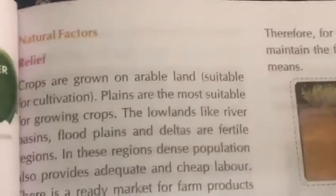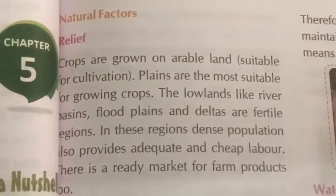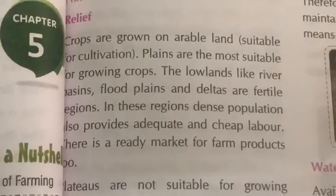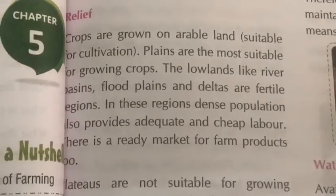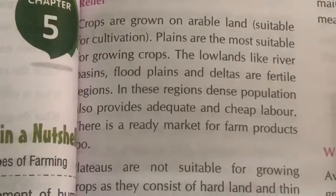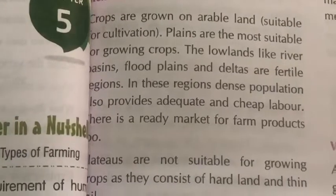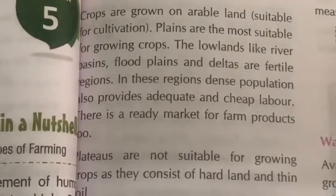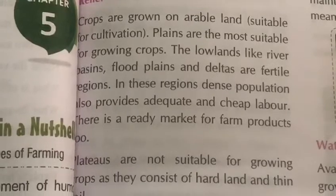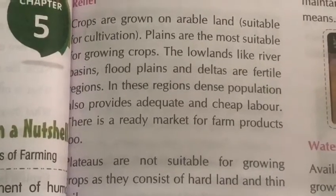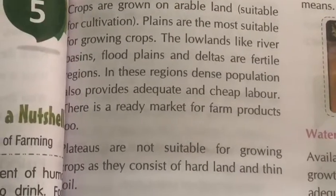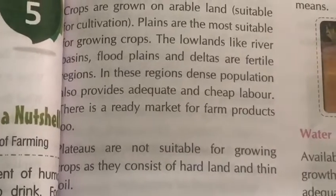First, we will read about the natural factors. The first is relief. Crops are grown on arable land — arable land means land which is suitable for cultivation. Plains are the most suitable for growing crops.